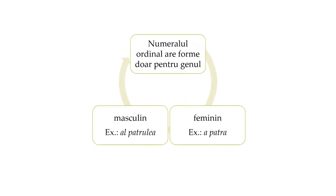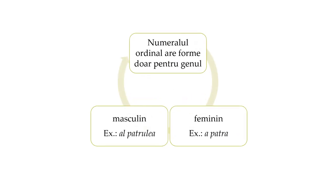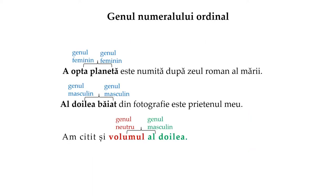Numeralul ordinal are forme doar pentru genul masculin și feminin. Numeralul ordinal este folosit cu forma de genul feminin atunci când însoțește un substantiv de genul feminin, ca în exemplu: a opta planetă este numită după zeul roman al Mării. Forma de masculin a numeralului ordinal este folosită în situația în care acesta însoțește un substantiv de genul masculin.